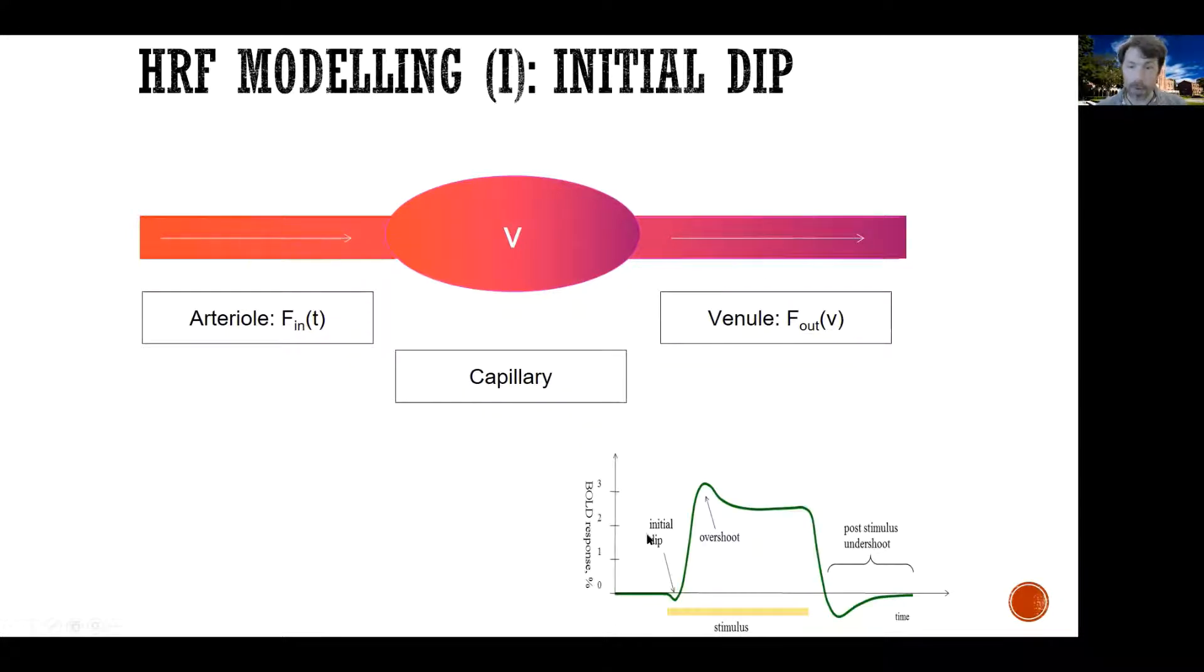Now, what I'm portraying down here is the typical hemodynamic response function. If we think of stimulating a part of the brain, and the stimulus is shown down here, the typical function that we would observe in terms of the BOLD signal has this distinct shape, which is pretty well approximated by a double gamma function, but we will get into this a little later. Now, what I want to show is how do different vascular events give rise to this specific shape.